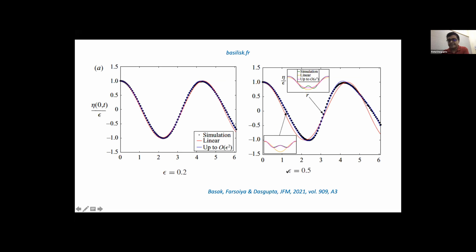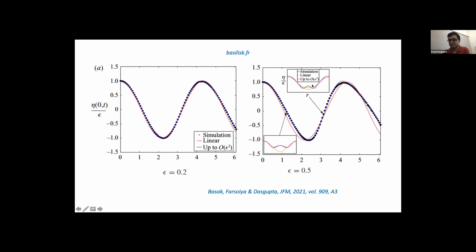Something interesting starts showing up when epsilon climbs to about 0.5. The simulation and the nonlinear model are always together; the linear model starts showing small deviations. At a certain instant, there is a wide dimple-like structure — the interface is actually moving down as a trough with a dimple on it. The dimple gets smoothed out when the trough reaches its extremity and then rises; when it rises again it forms another, much narrower dimple. The order epsilon-squared theory cannot capture this narrower dimple — it smooths it out — and of course the linear model cannot capture any of these things.